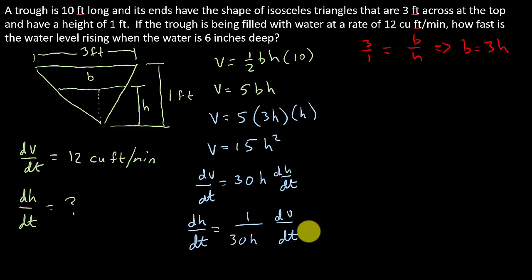So let's see, dV/dt, that's 12, and then I just need h. Well, it says how fast is the water level rising when the water is 6 inches deep? So that tells me that h = 0.5. Notice they give it to you in 6 inches, but this is in feet. So we need to get the height in feet.